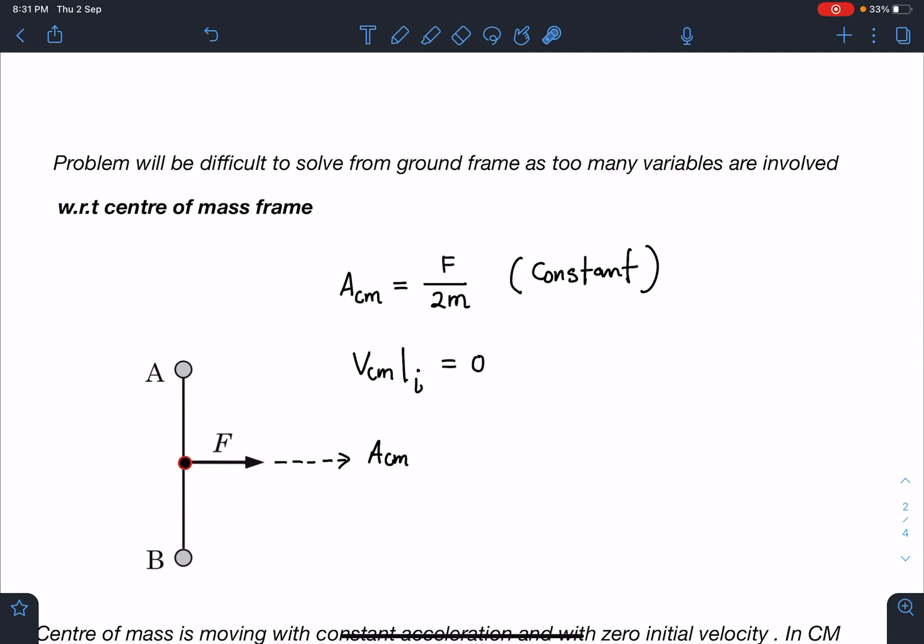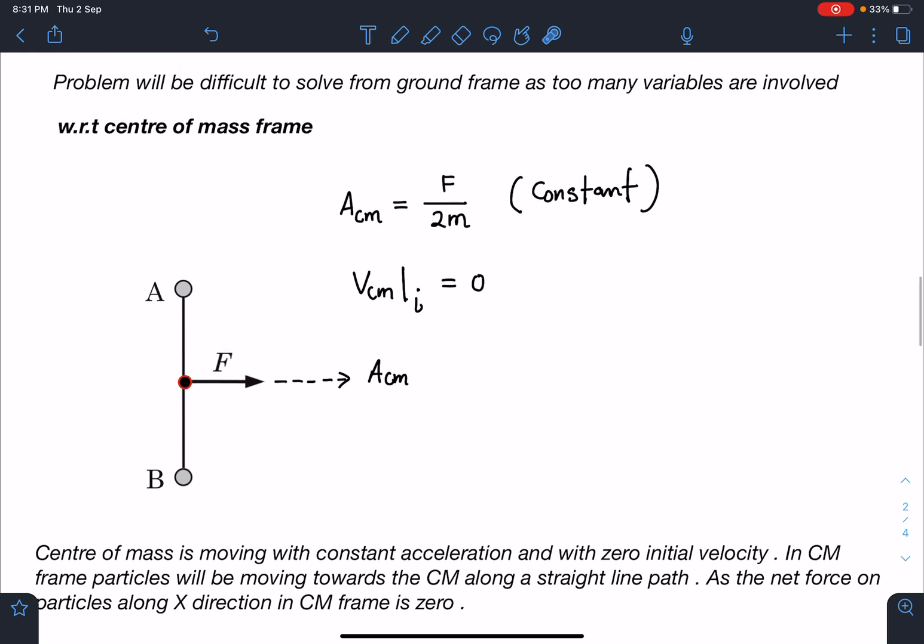However, it becomes very easy by center of mass frame. It's quite decent by using force method, but that is also slightly lengthy. This method is quite simple. So let's discuss. Initially, since constant force is applied, center of mass will have an acceleration of F by 2m, which remains constant, and initial velocity of center of mass is zero.